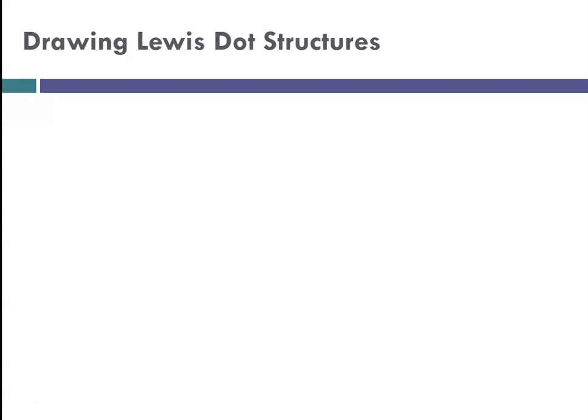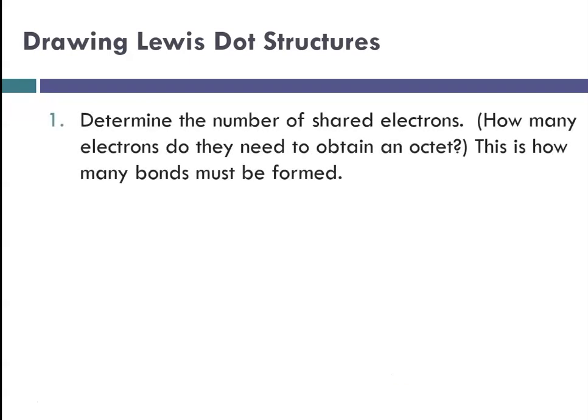So drawing a Lewis dot structure. First thing you're going to do is determine the number of shared electrons. So how many electrons do they need to obtain an octet? So if we were talking about a carbon atom, carbon has 4 valence electrons. It's in group 4. And we think about it has 2s and 2p, so 4 electrons. In order to get to an octet, which is 8, it needs 4 more electrons.